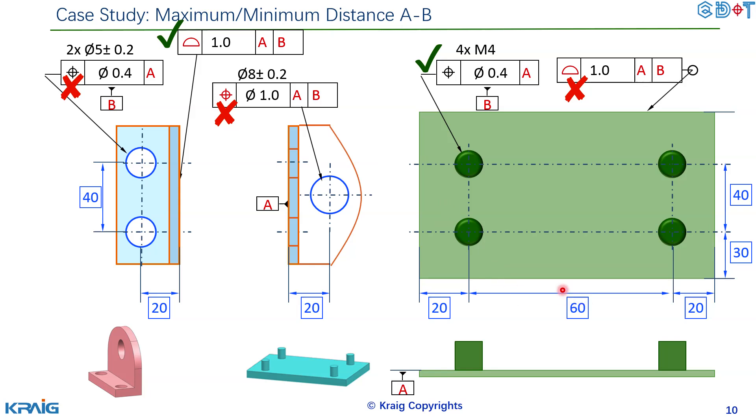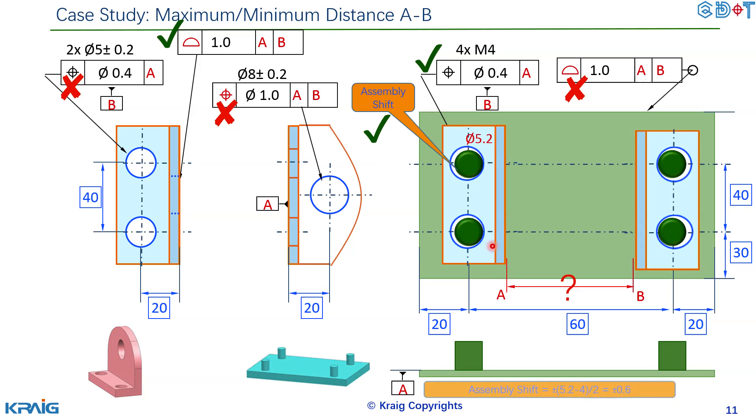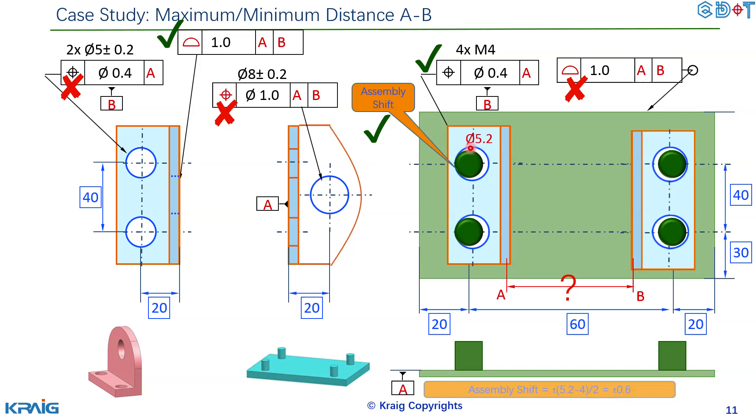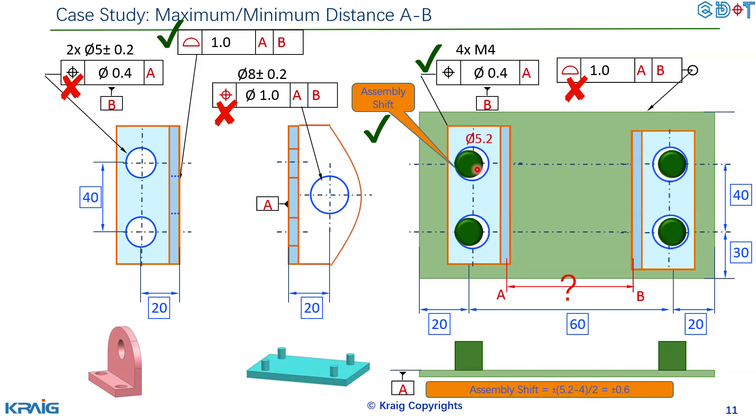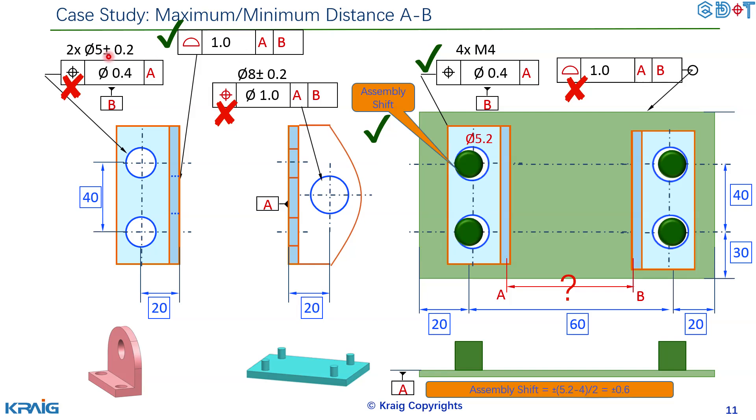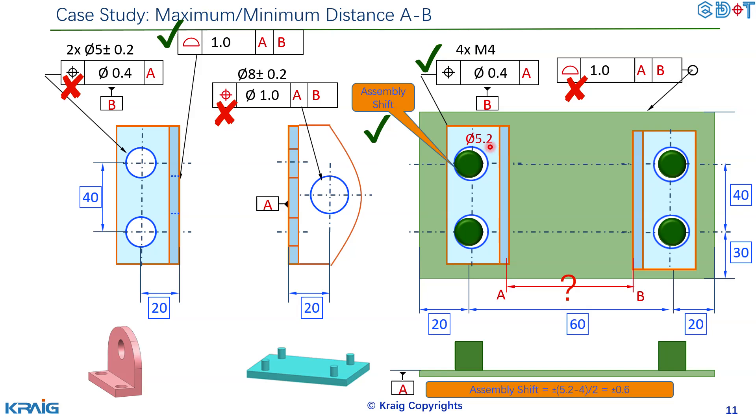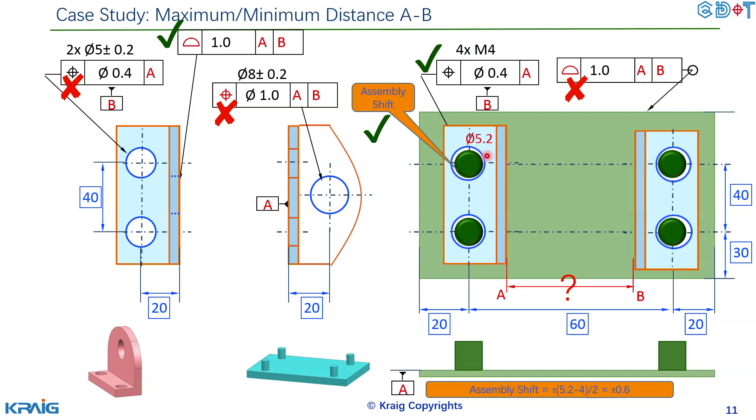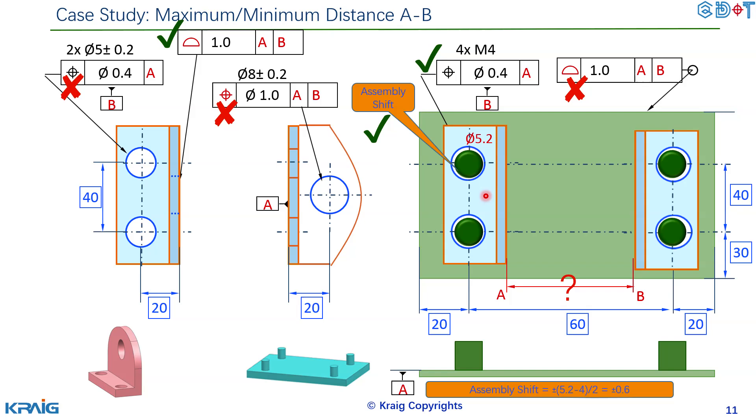That's all we need to consider and once you analyze all of these tolerances there's one more thing, don't forget. Since this hole will be produced the maximum is 5.2 here. See here 5 plus minus 0.2 so the maximum diameter will be 5.2.